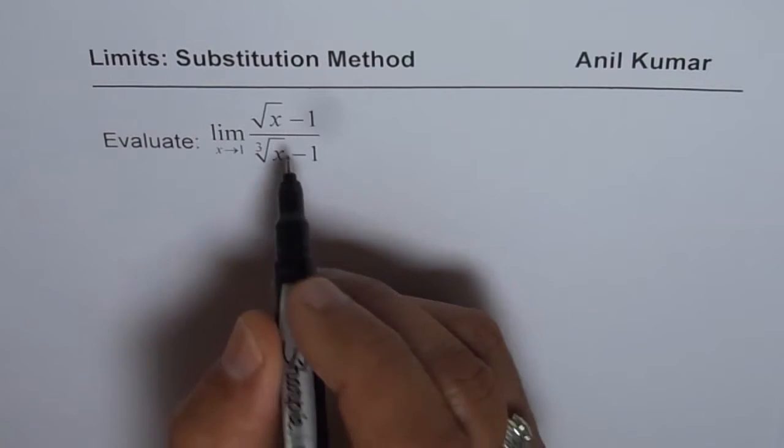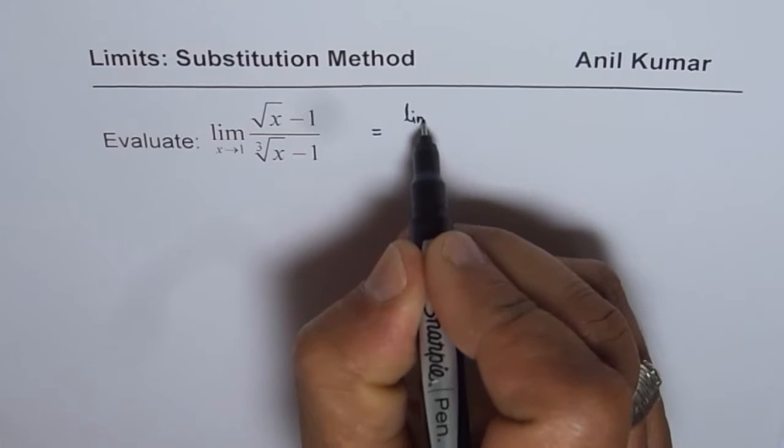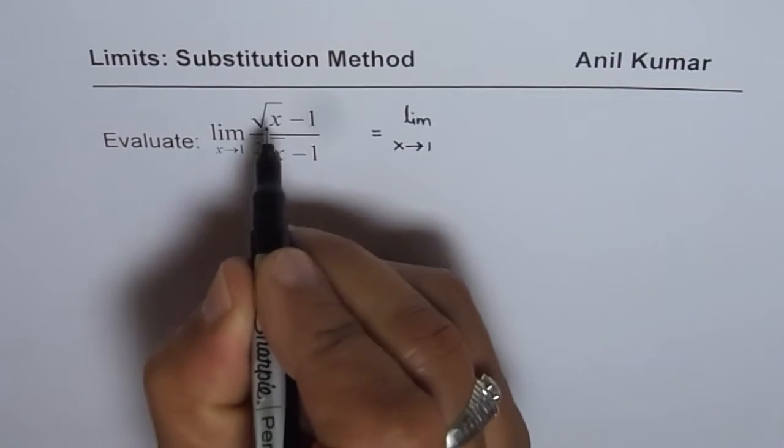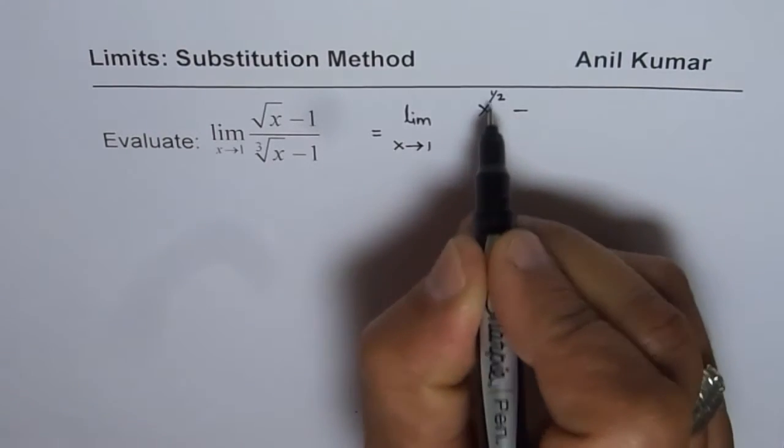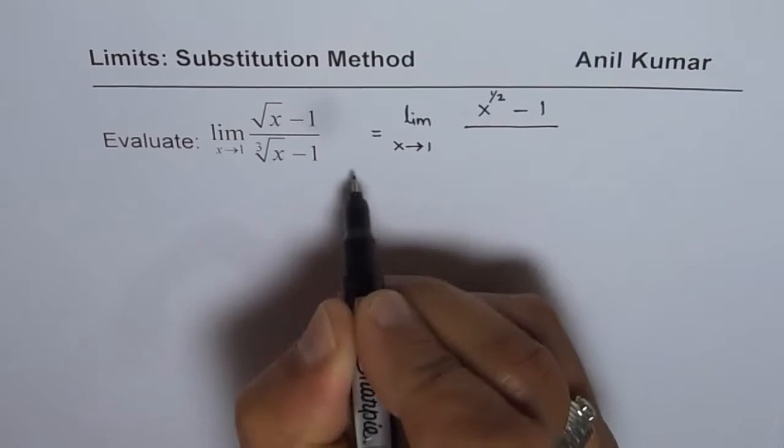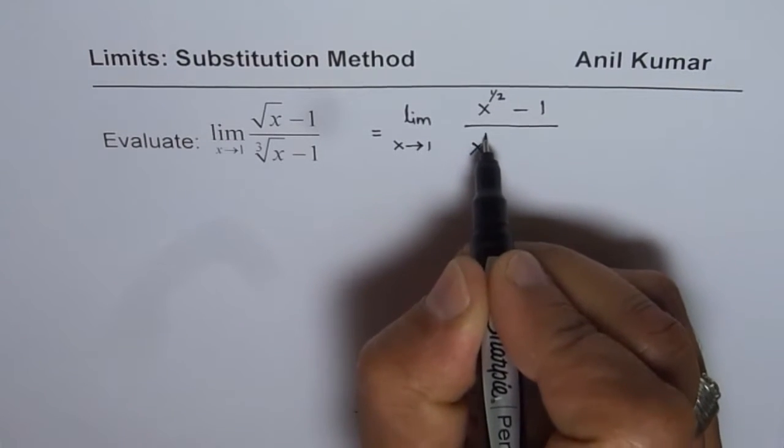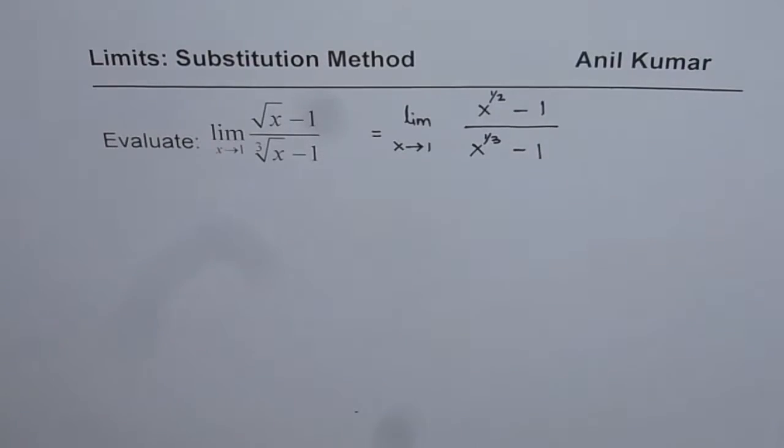So in such cases, what we can do is we can substitute sixth root of x. Let me rewrite this question first as limit x approaching 1, x to the power of half minus 1 over x to the power of 1 over 3 minus 1. So that is the question for us.